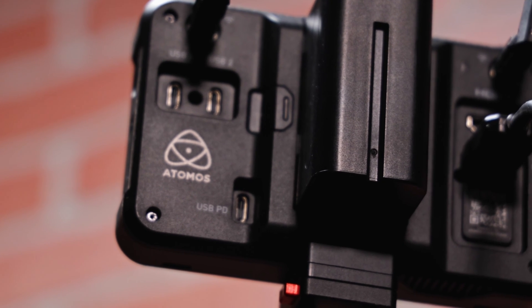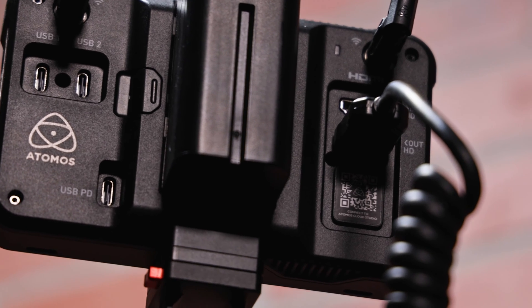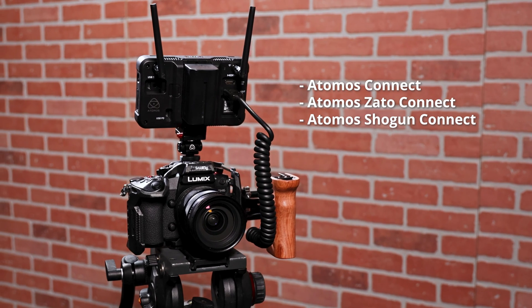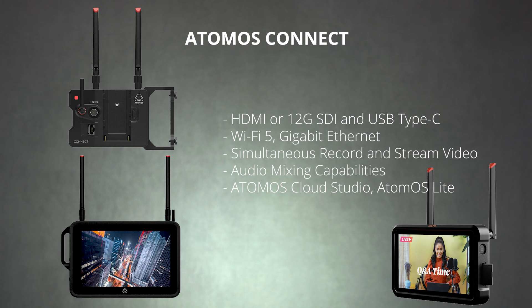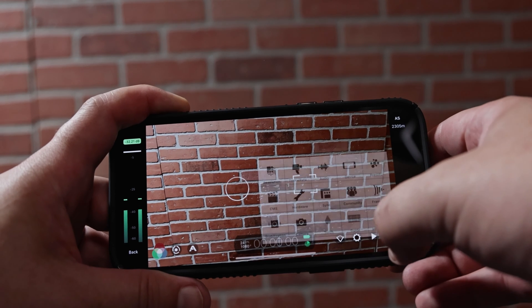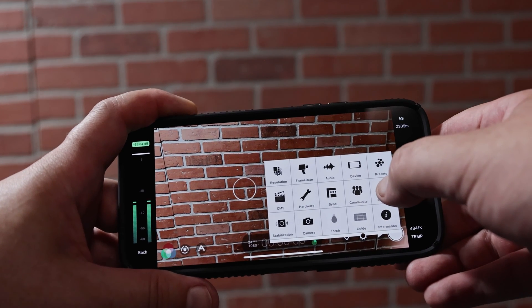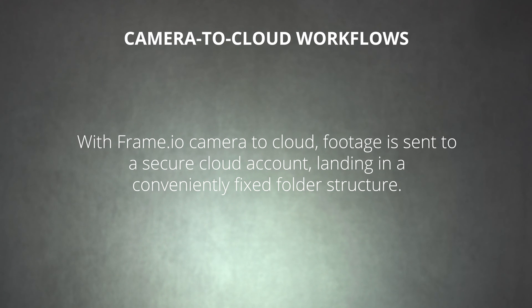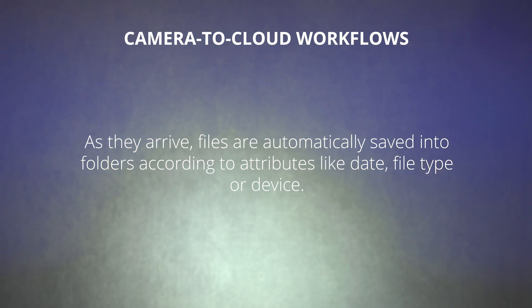Another way to stay organized is to establish a system that delivers footage automatically from the camera to the appropriate folder. Camera-to-cloud is an emerging workflow that enables quick delivery from set to editorial. It requires a network-connected camera — products like the Teradek Serv 4K and Connect modules allow you to upload proxy files directly from any camera, from mirrorless cameras to professional cinema cameras. Mobile filmmaking app Filmic Pro can also send proxies recorded on your phone to the cloud via cellular data or Wi-Fi. With camera-to-cloud, footage lands in a conveniently fixed folder structure, organized by date, file type, or device, and editors can start working immediately, even before production has wrapped up for the day.